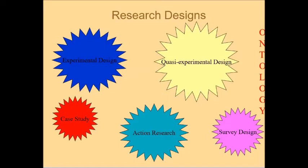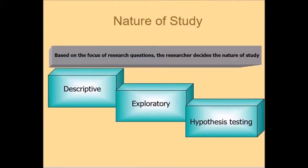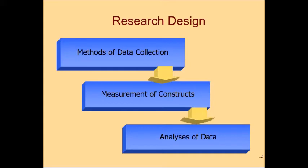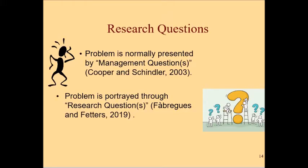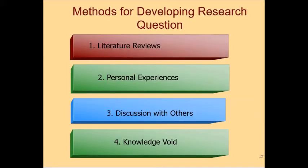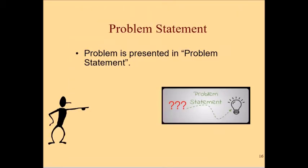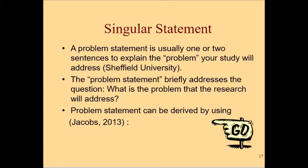Research designs would be chosen by the researcher based on the ontology of research. Main types of research designs are experimental design, quasi-experimental design, survey research, case study design, and action research design. The nature of the study and the selection of research design are also dependent on the research question. Keep in mind that the research question is very important and should be derived following proper procedures described in the literature, reported in the problem statement, which should be a singular statement.